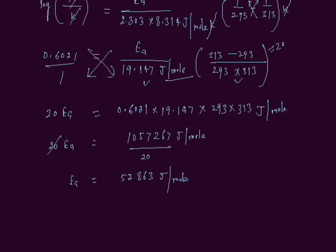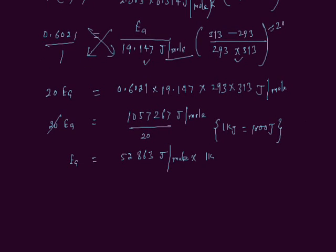We know that the unit of energy of activation is kilojoules per mole. That is why we convert joules per mole into kilojoules per mole. 1 kJ is equal to 1000 joules. We multiply by 1 kJ divided by 1000 joules. Joules will cancel out. You can divide this number by 1000. We get 52.863 kilojoules per mole.